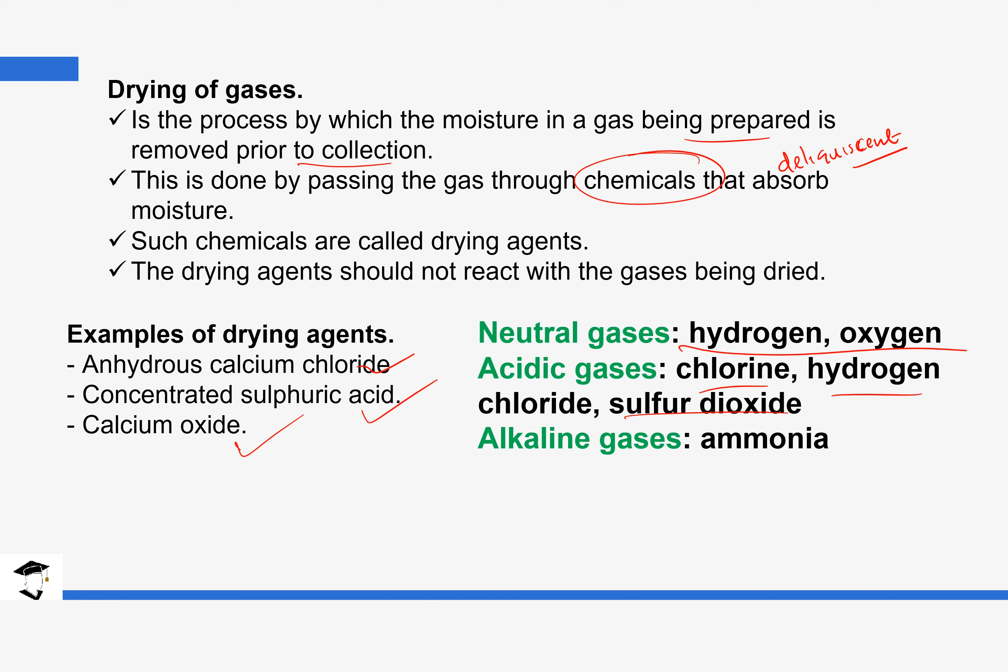And then some examples of alkaline gases are ammonia, and we cannot use concentrated sulfuric acid with ammonia because it is going to react. This reaction is going to happen. And also we cannot use anhydrous calcium chloride because it's going to form a complex. Although we are going to discuss this later as well in Form 3. But it is important for us to know that the properties of the gas that we are going to use is going to determine if it can be dried by specific drying agents or other drying agents.